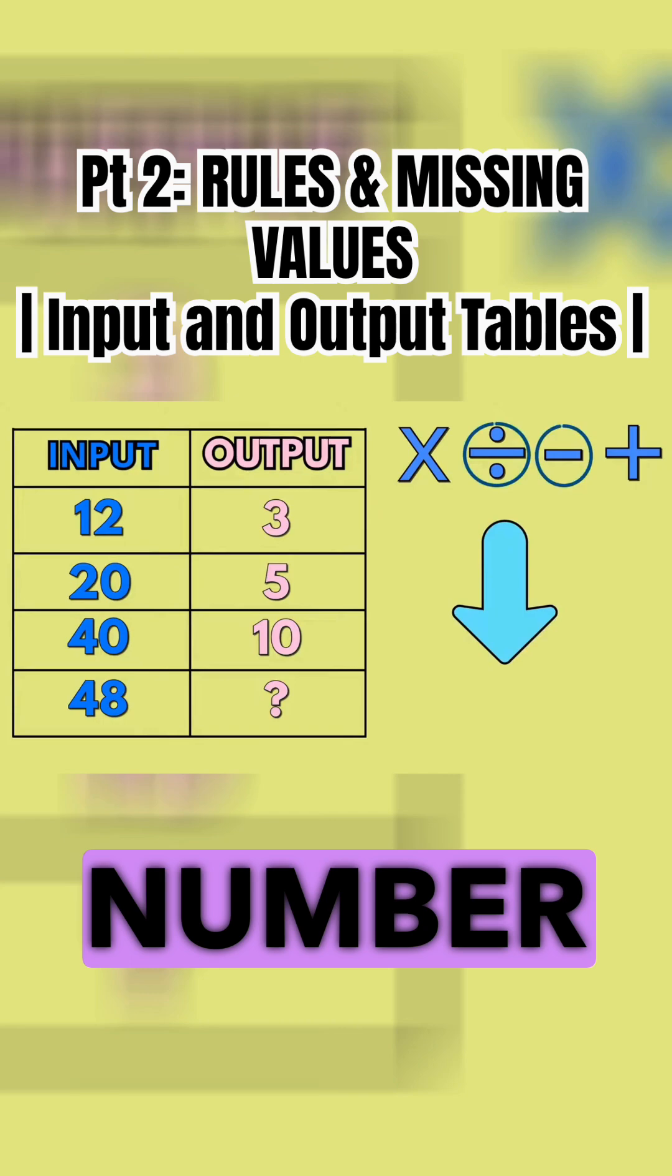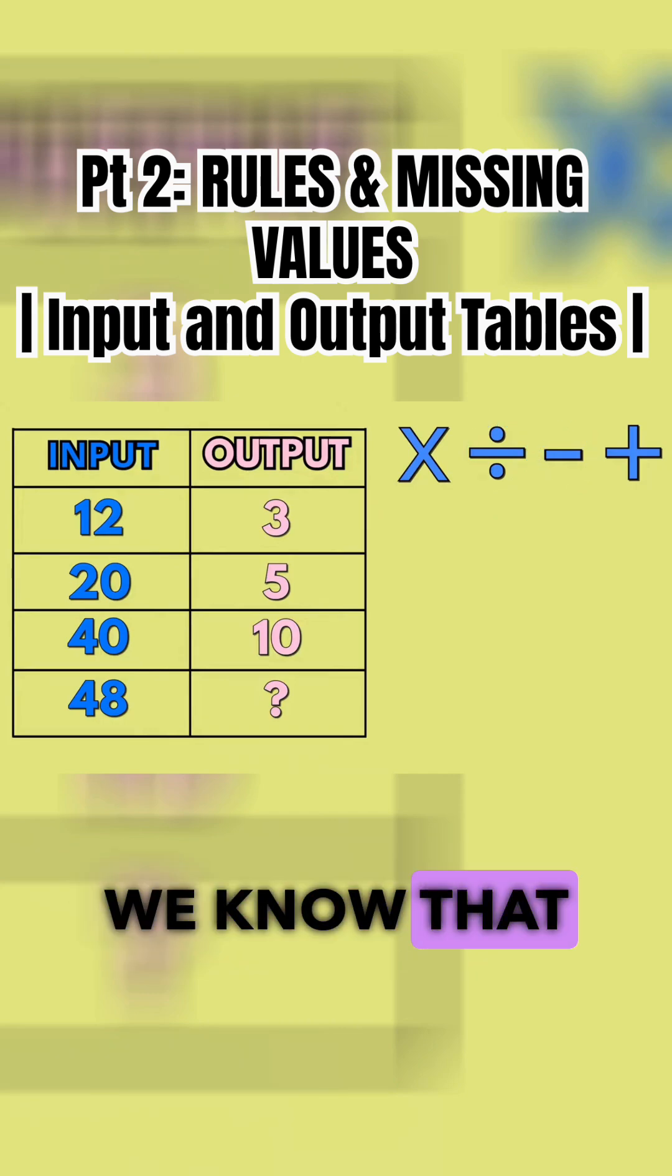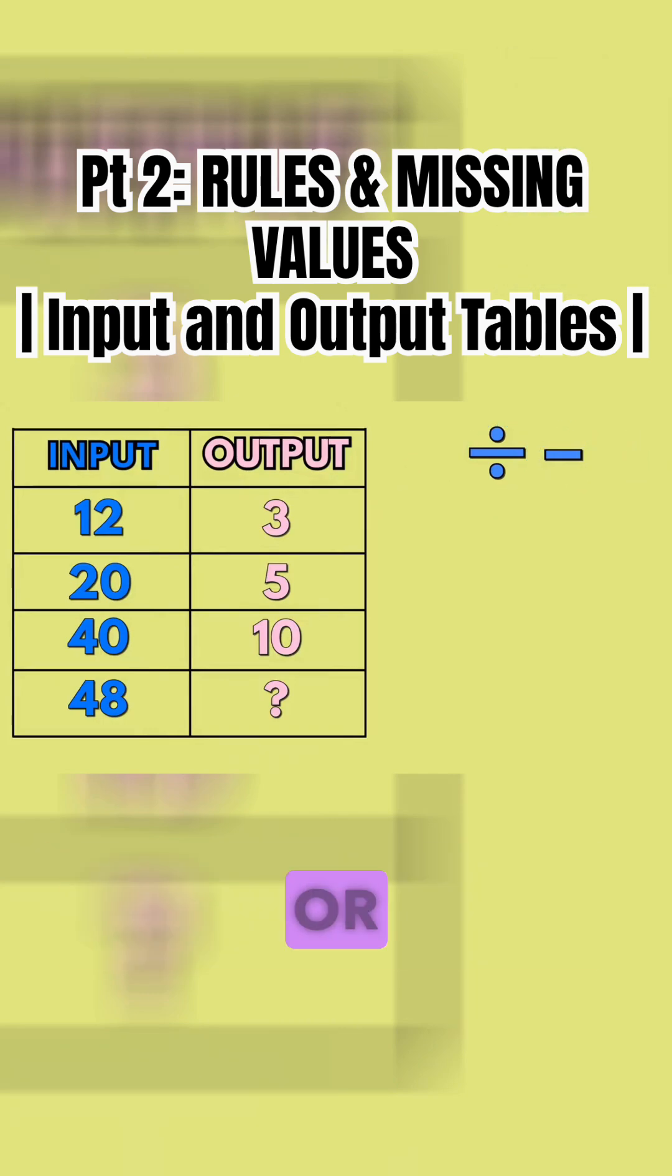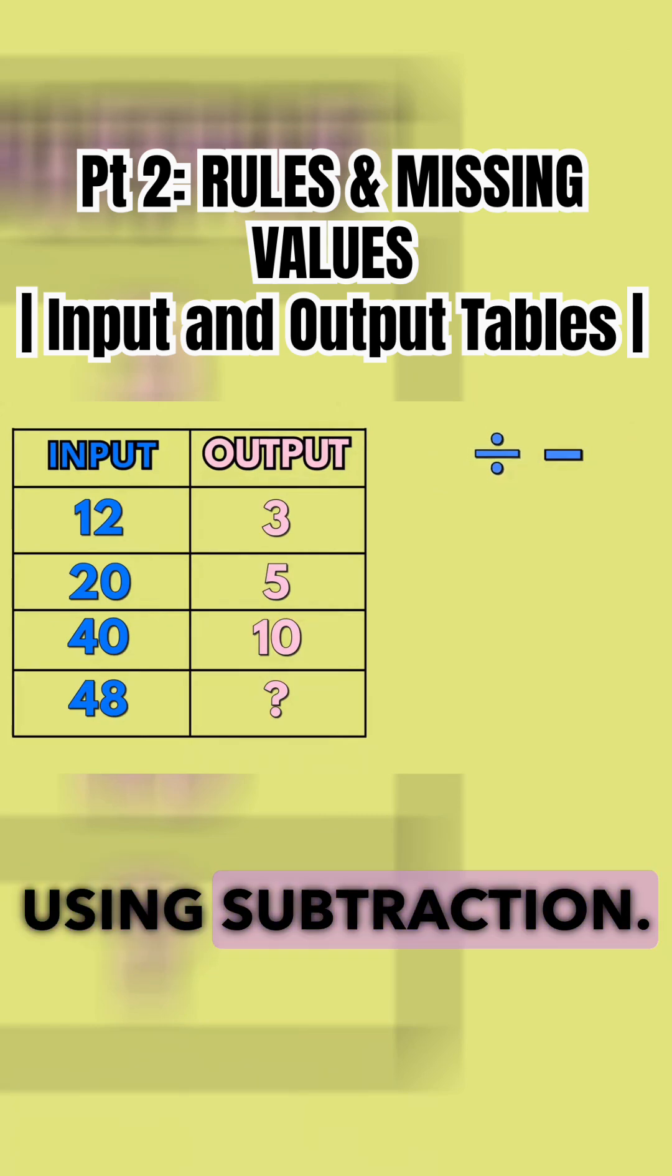Since our number became smaller we know that the rule will involve division or subtraction. Let's first try to find a rule using subtraction.